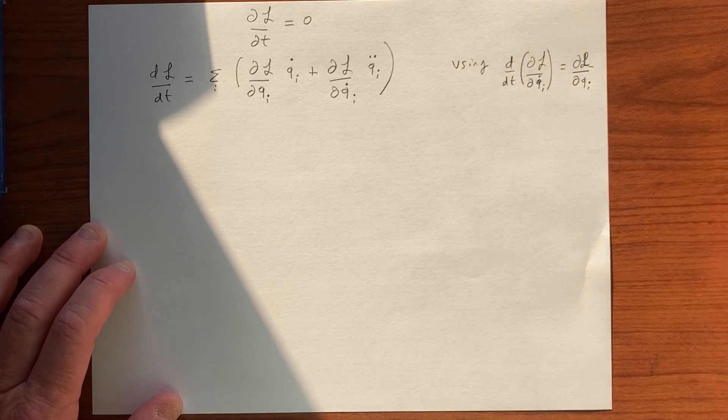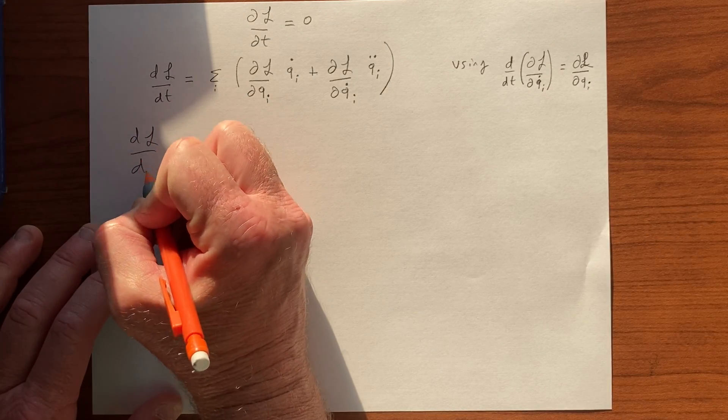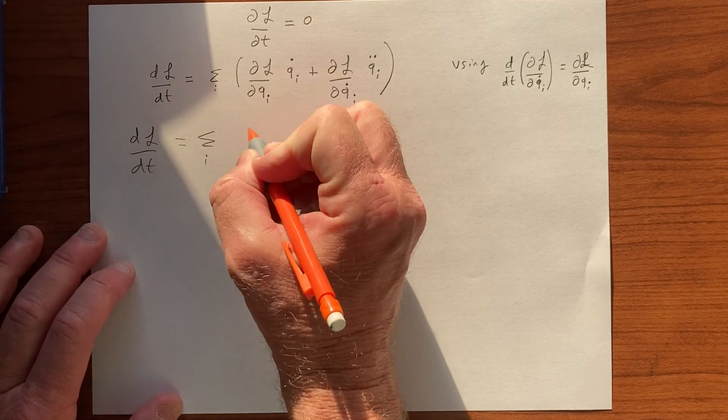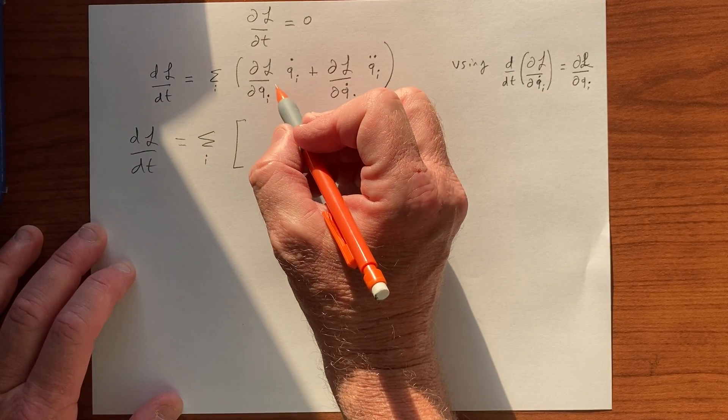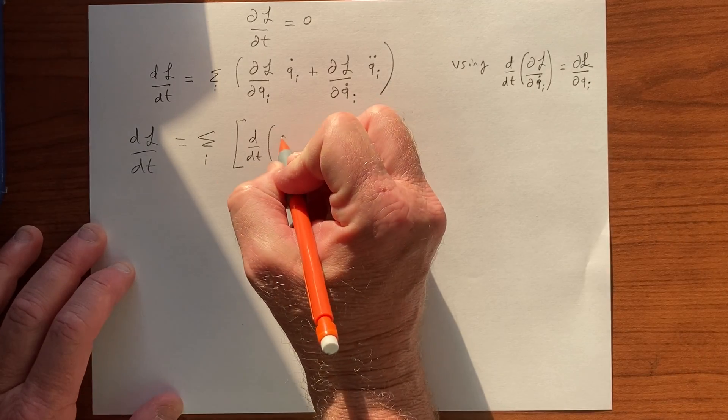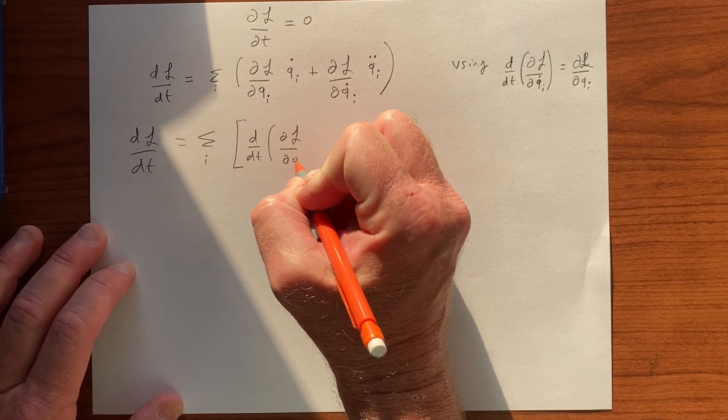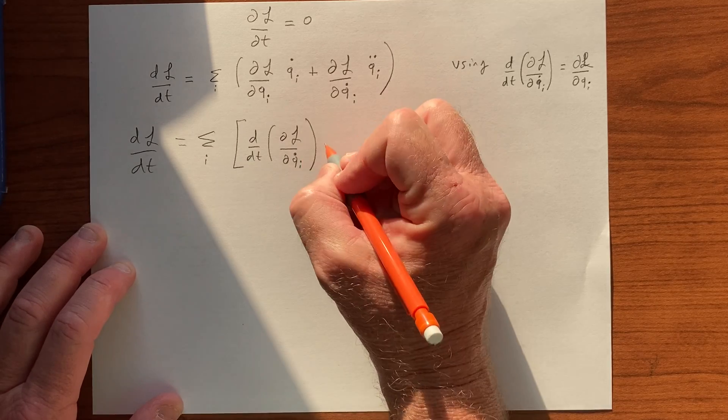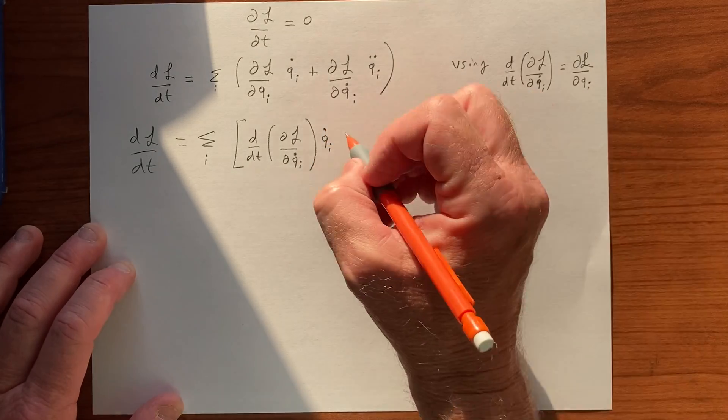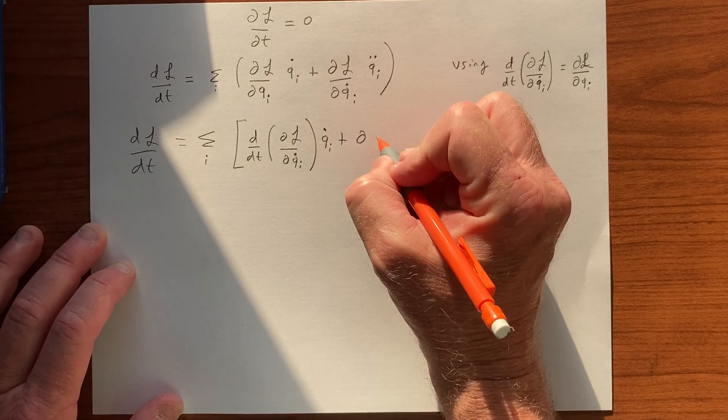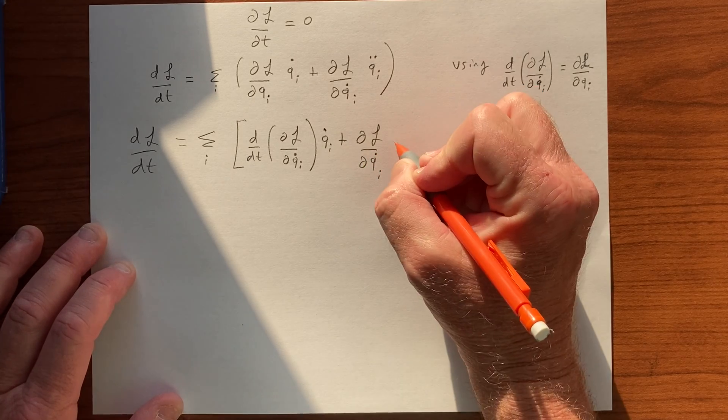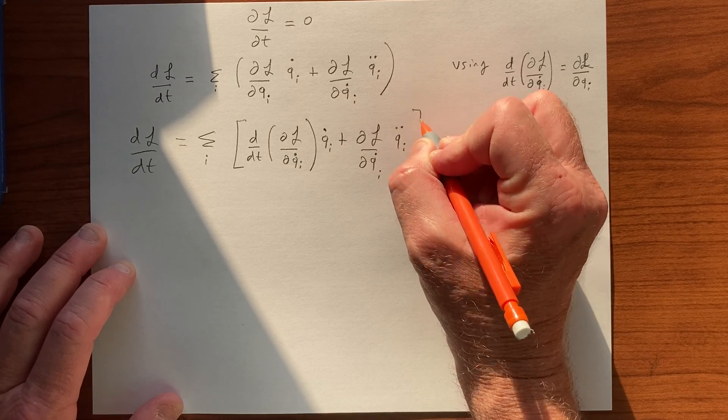And so we get DL by DT is equal to a sum of D by DT of DL by DQi dot, and the same thing, DL by DQi dot, Qi double dot.